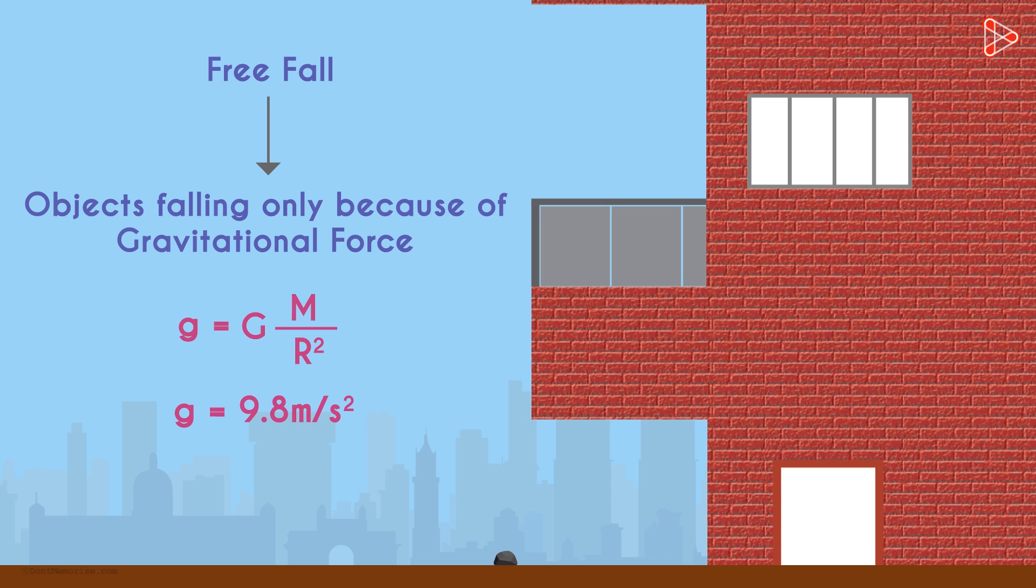But do you know what's interesting? This acceleration is not dependent on the object's mass. This m is the mass of the earth, not the object. Why is this interesting? Let me give you a situation.